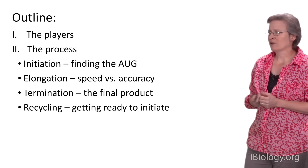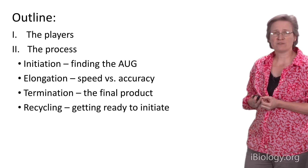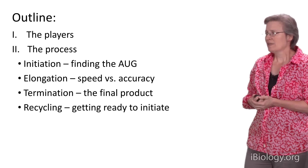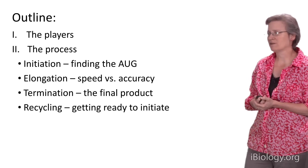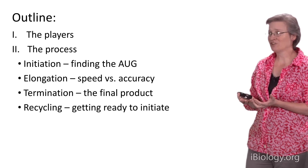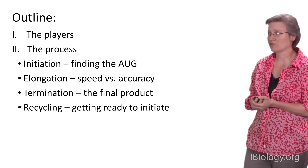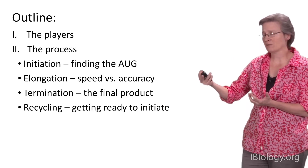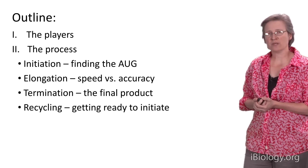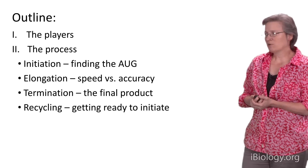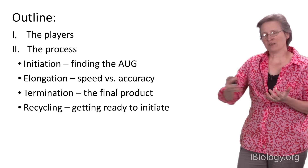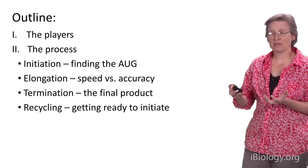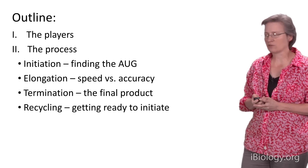Today I'm going to focus on two general areas. We'll start by outlining the different players involved in the process, including messenger RNAs, tRNAs, proteins, and ribosomes. Then we'll talk sequentially about the four basic steps of translation: initiation — finding the AUG or start site; elongation — iteratively adding amino acids to the growing protein chain; termination — stopping protein synthesis at the end of a coding region; and recycling — so the machinery can begin again.